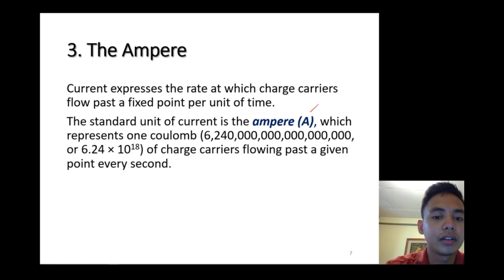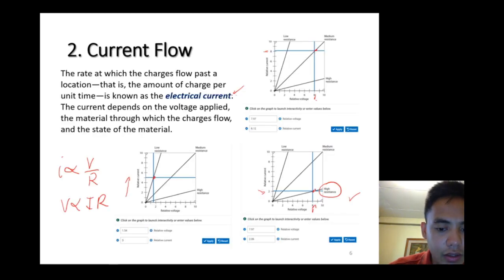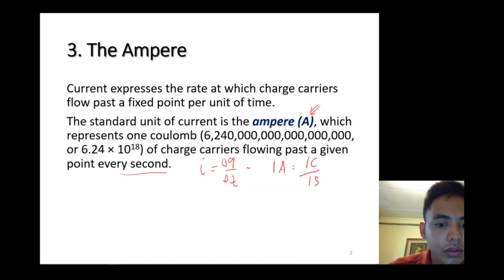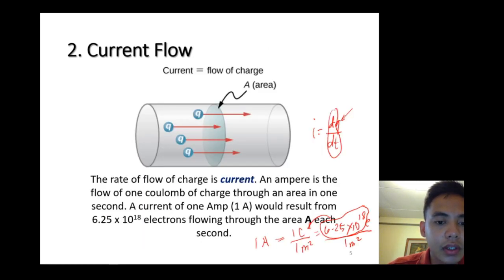The standard unit of current is ampere, which represents one coulomb. One coulomb is 6.24 times 10 to the 18 electrons of charge carriers flowing past a given point every second. Basically, I = Q/t or delta Q over delta T. By unit, one ampere equals one coulomb over one second. I think I made a mistake in the previous slide, sorry for that.